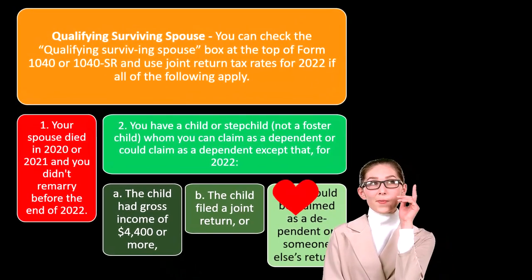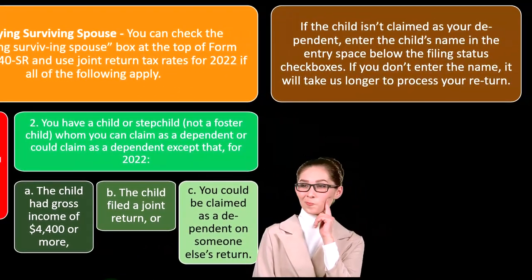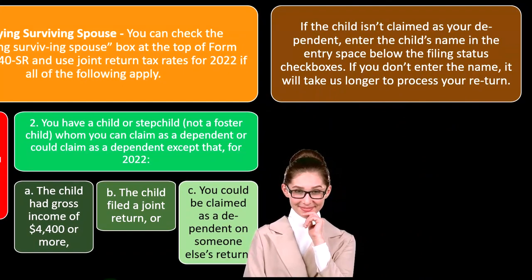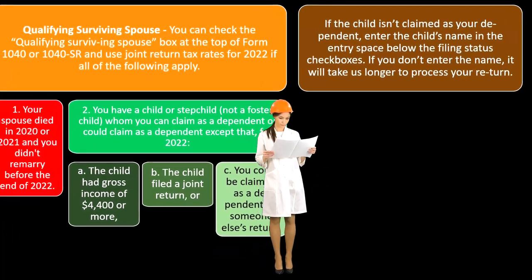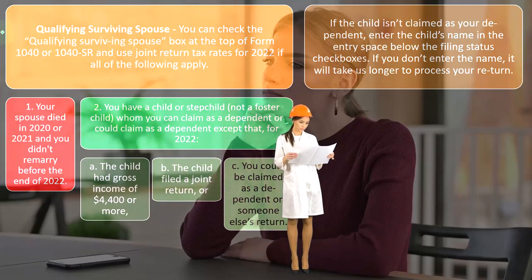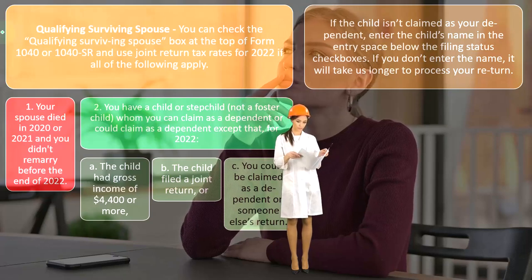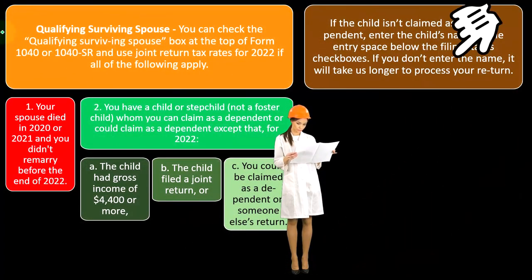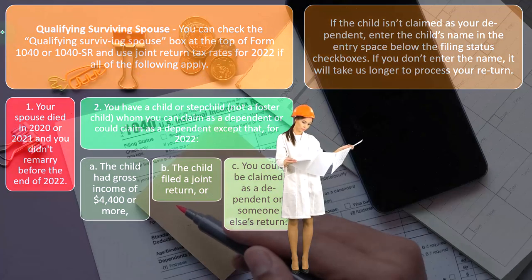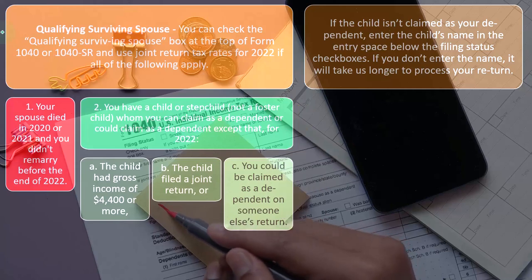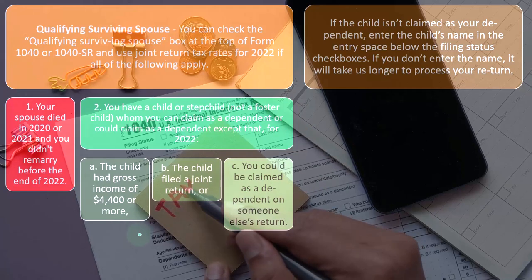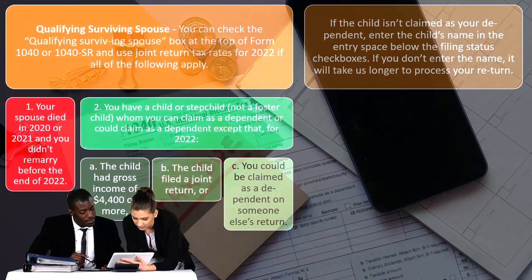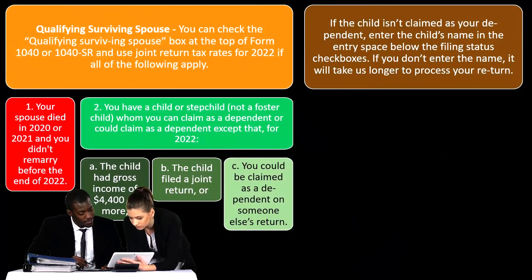You could be claimed as a dependent on someone else's return. If the child isn't claimed as your dependent, enter the child's name in the entry space below the filing status checkbox. If you're filing as qualifying surviving spouse, there would normally be a dependent as the qualifying factor. But if you don't have a dependent due to one of these special situations, you still need to provide the dependent information so you can tell the IRS that's the rule allowing you to qualify.